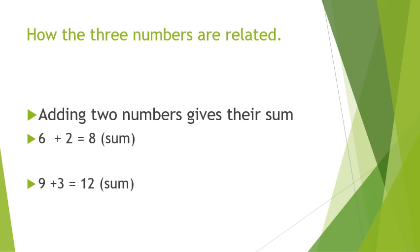Now children, look at the next example. 9 plus 3 is equal to 12. Here children, the two numbers are 9 and 3. So when we add 9 and 3, we get the answer as 12. So 12 is their sum.